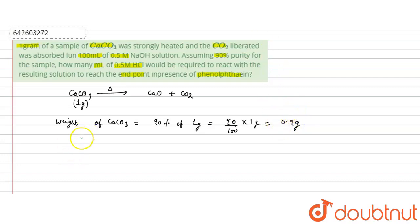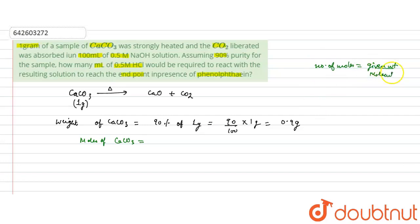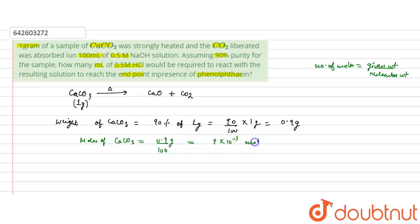Now we calculate the moles of calcium carbonate. The number of moles equals given weight divided by molecular weight. The given weight is 0.9 grams and the molecular weight of calcium carbonate is 100 grams per mole, so the number of moles is 9 × 10⁻³ moles.